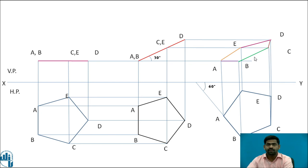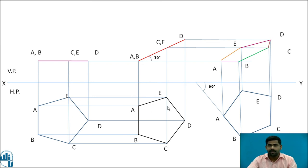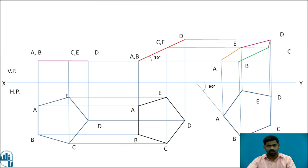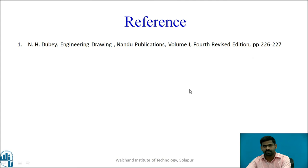You will get the third stage where the problem is completed. As per the given condition, the surface is inclined 30 degrees to the HP and side AB is inclined 60 degrees to the VP. While drawing, remember to mention these inclinations: 30 degrees and 60 degrees. If inclination with the HP is given, draw it in the VP, and when inclination with the VP is given, draw it in the HP. These are the references. Thank you.